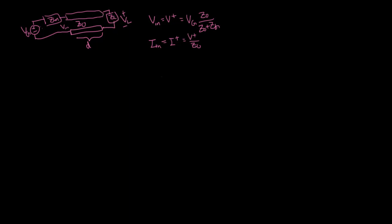On the other side, as we go from Z naught to Zl, you're going to experience a reflection. Your first reflection V minus is going to be equal to Gamma times V plus, where Gamma is equal to new minus old over new plus old. So our key parameters are V plus, I plus for the initial wave, and Gamma at the load.